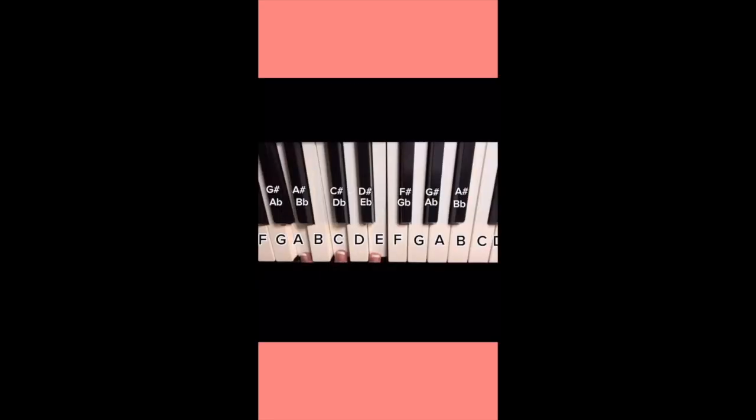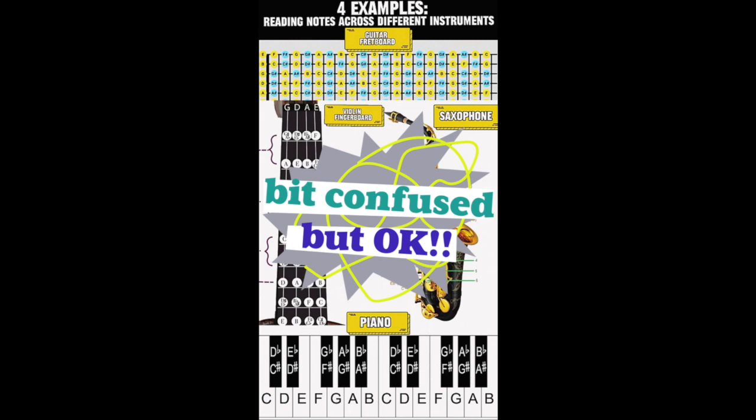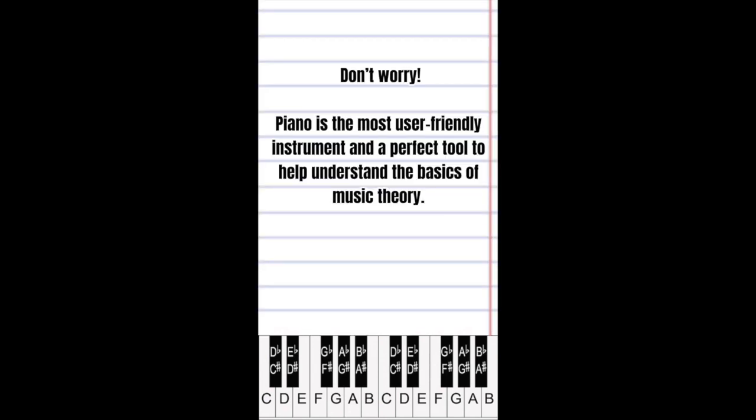In music, we use a series of letters A through G to describe the tones or notes that we're playing. This music theory concept is relevant to every instrument, so it's important to understand this whether you're a singer or you're just picking up an instrument for the first time.